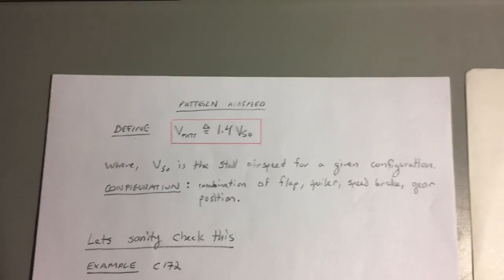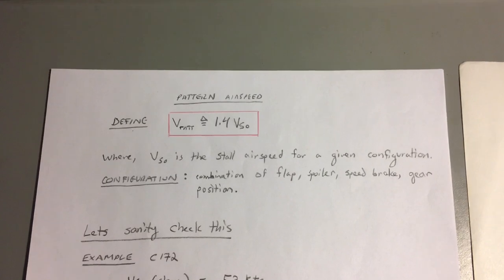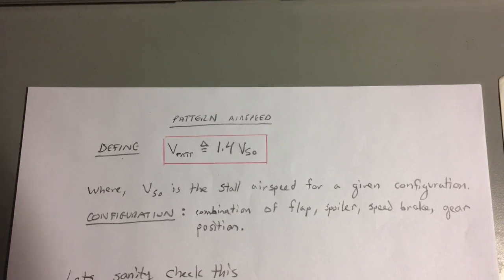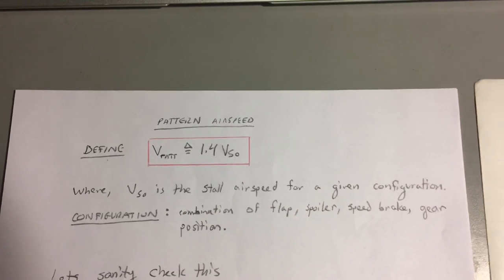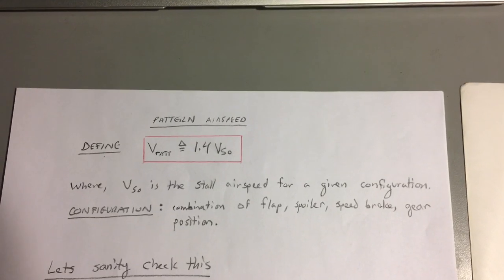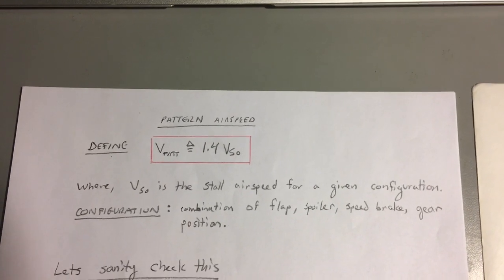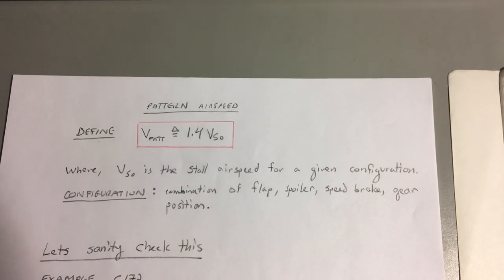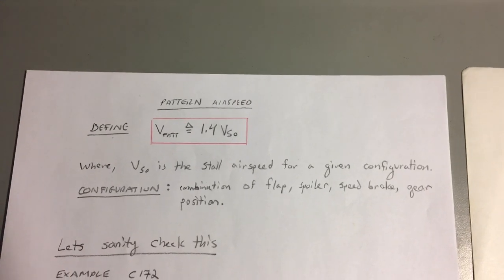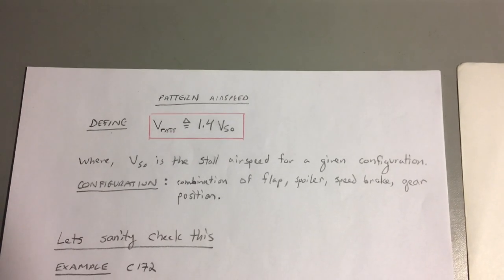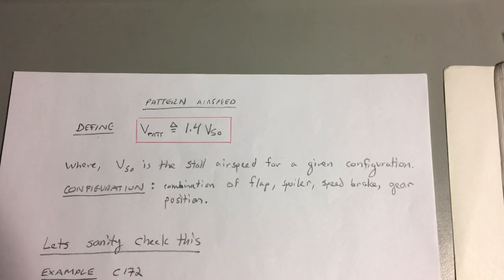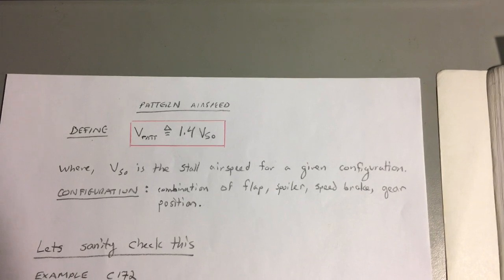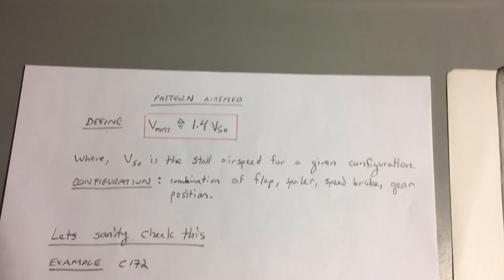The first thing we're going to start with is a definition. I'm going to define the pattern airspeed which is V subscript pattern, and we're going to define that as 1.4 times VSO. I'm going to define VSO as the stall speed of the airplane for a given configuration, and I'm going to define configuration to mean a combination of flaps, spoilers, speed brakes, and landing gear position.